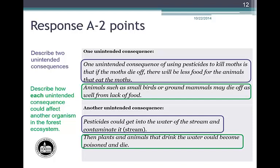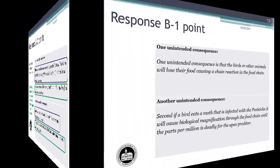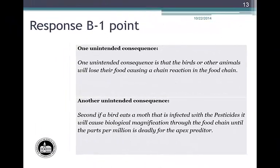Response A is an example of a student response that earns a total of two points. Now for Student Response B. Does the response describe two unintended consequences and how each could affect another organism? First unintended consequence: 'The birds or other animals will lose their food, causing a chain reaction in the food chain.' Second: 'If a bird eats a moth infected with the pesticides, it will cause biological magnification through the food chain until the parts per million is deadly for the apex predator.'